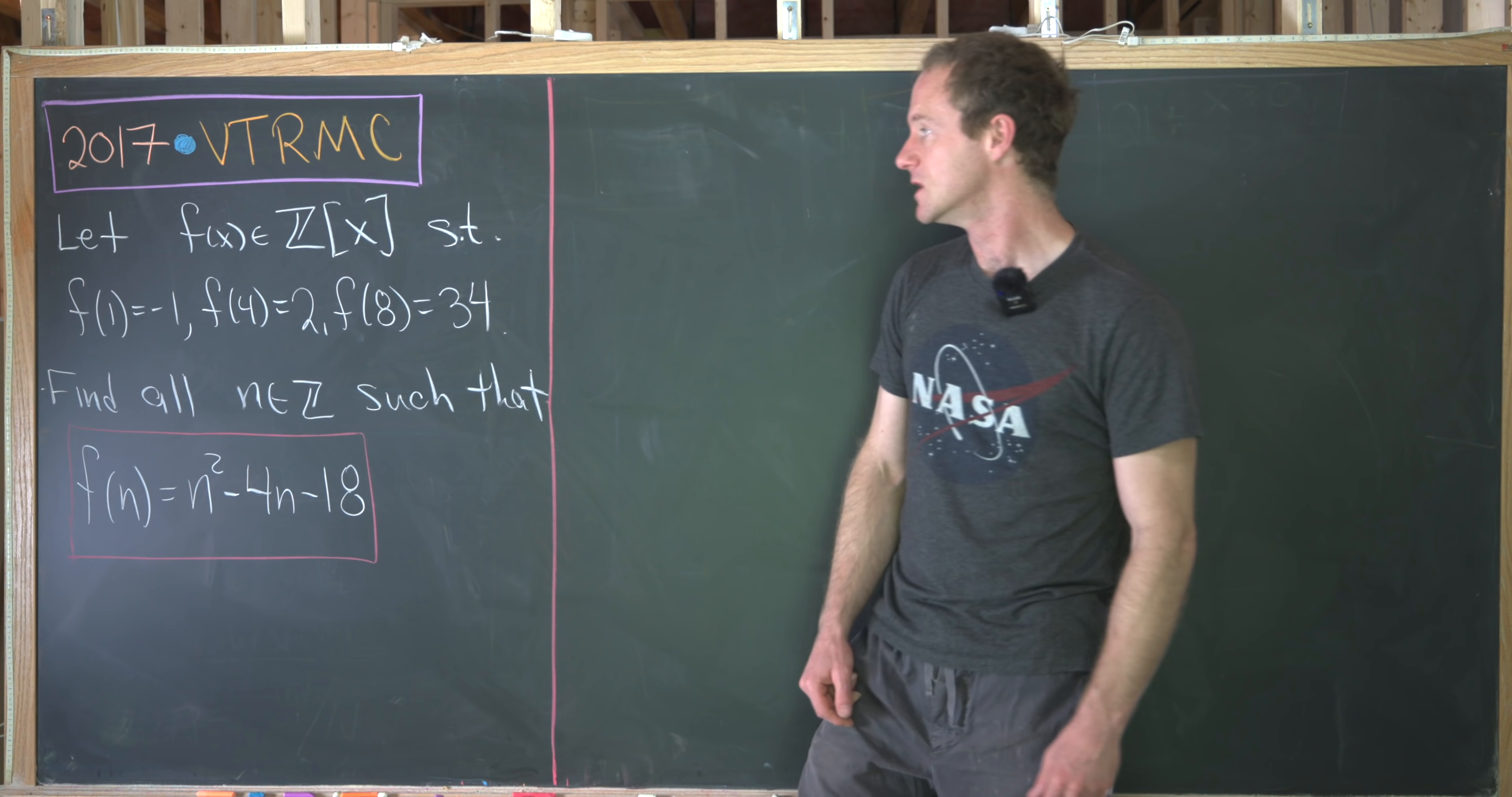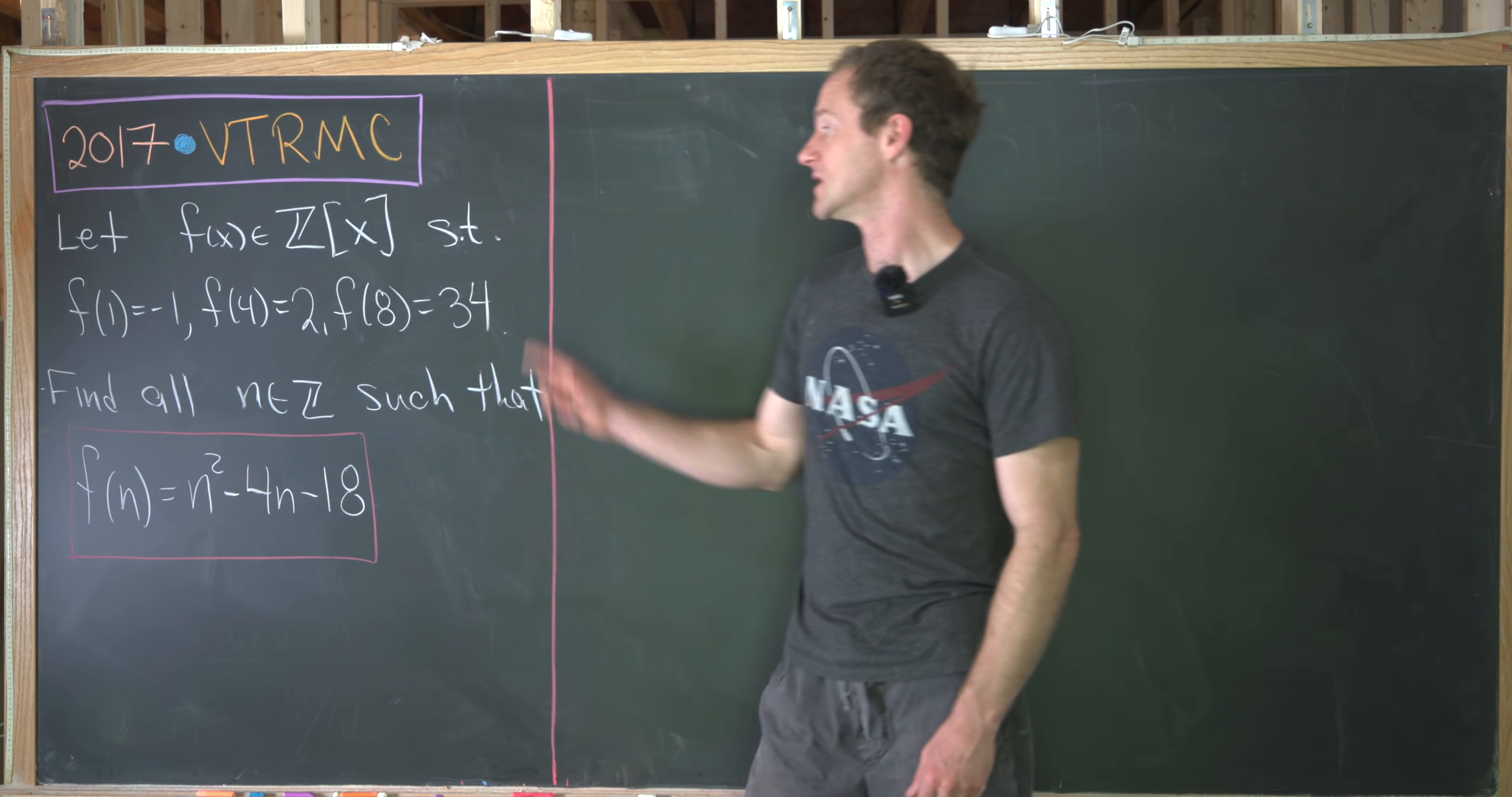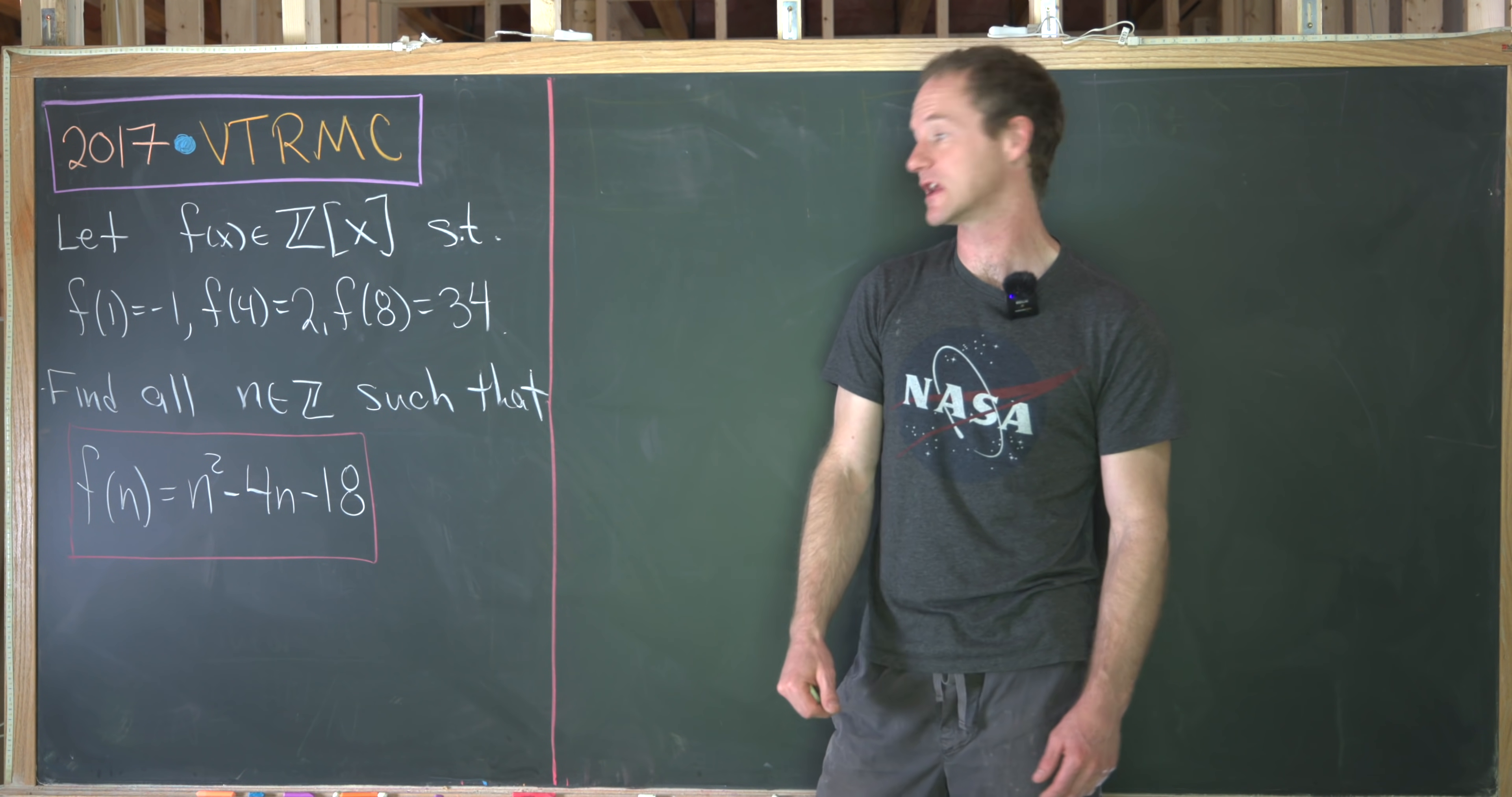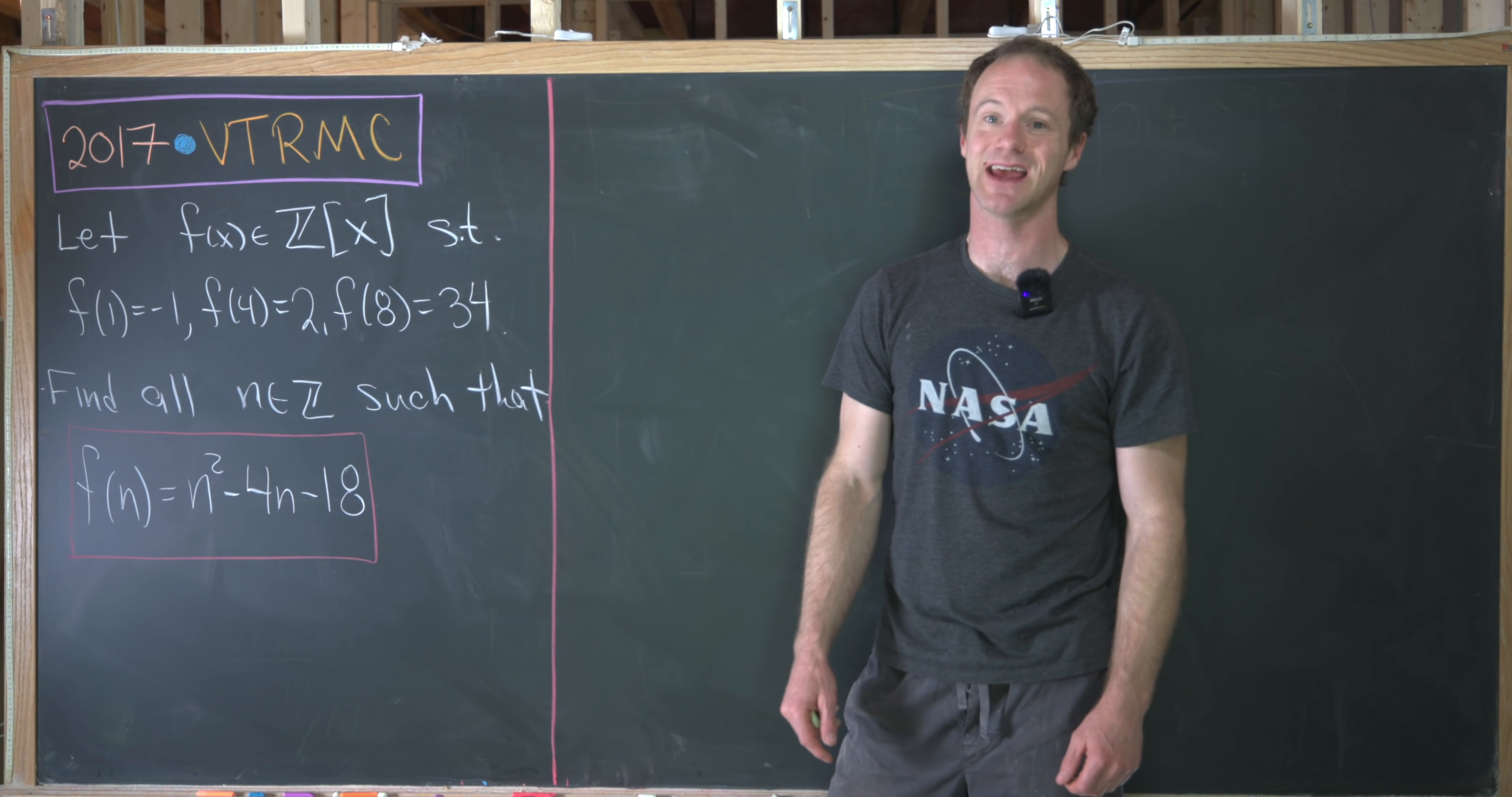Let's look at the statement of this problem. We want to have a polynomial f of x in Z[x], so that's the ring of polynomials with integer coefficients such that f evaluated at 1 is negative 1, f evaluated at 4 is 2, and f evaluated at 8 is 34. Our goal is to find all integers n such that when we evaluate f at n, we get n squared minus 4n minus 18.